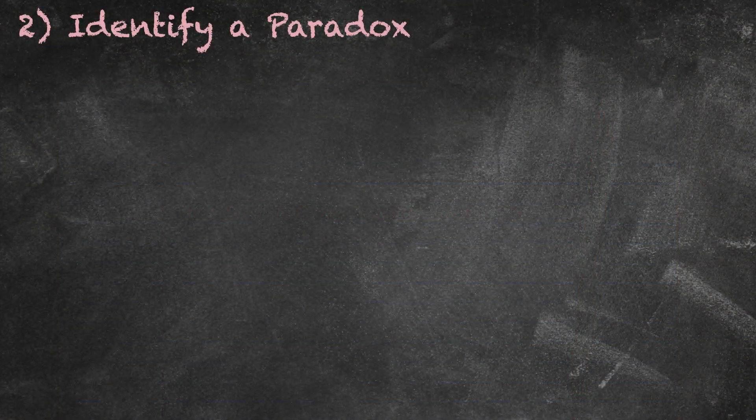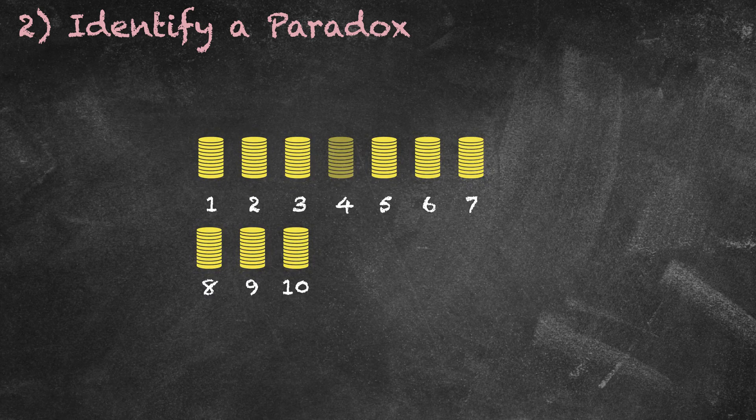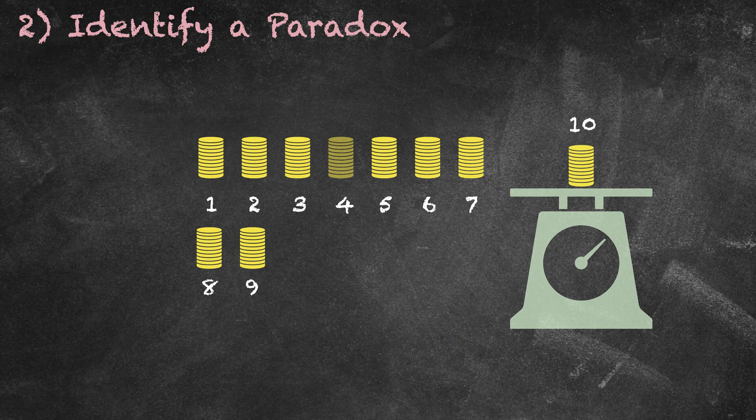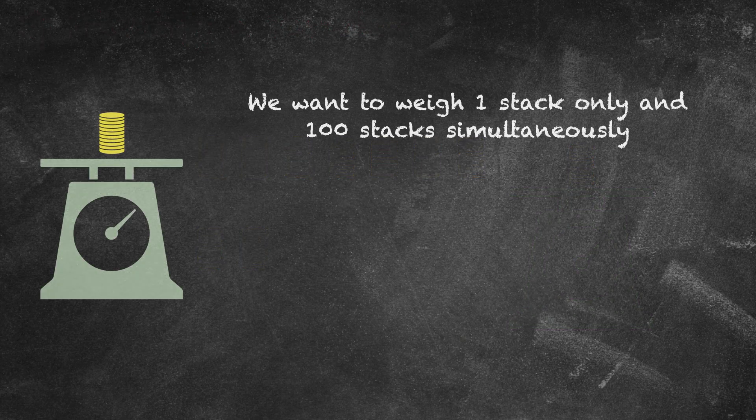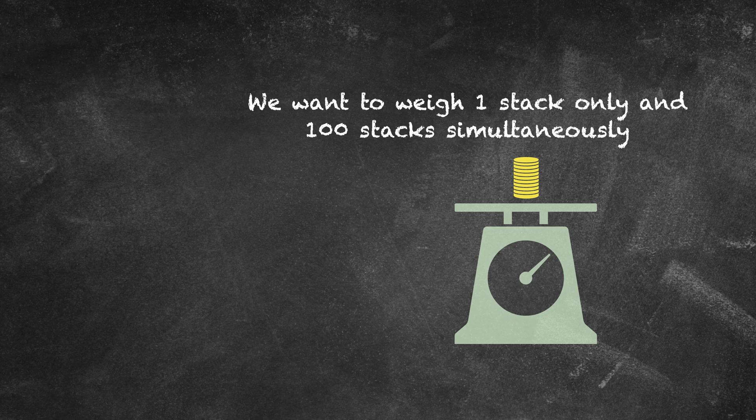Let's apply the second productive tactic. Let's find a paradox. We notice that if we pick up 1 stack only at random, we might ideally identify the counterfeit stack with 1 weighing only. But the probability that this is counterfeit is very low. The paradox is therefore this: we want to weigh 1 stack only and 100 stacks simultaneously. That looks quite impossible.